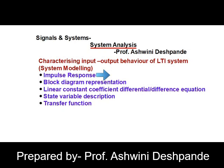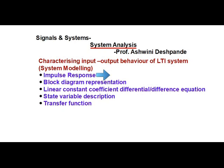There are five different ways how we can express for an LTI system an input-output relationship. The first one is an impulse response, another is a block diagram representation. Third one is using linear constant coefficient difference or differential equation, state variable description and transfer function.